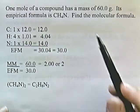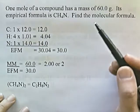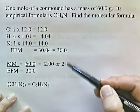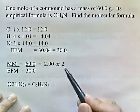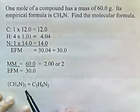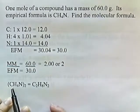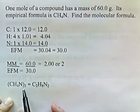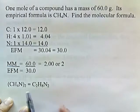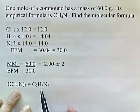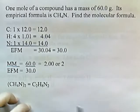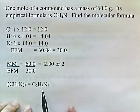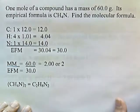This tells us the molecular formula has twice as many atoms as the empirical formula. So we take 2 and multiply all the subscripts in the empirical formula by 2, giving C2H8N2. This is our molecular formula: C2H8N2.